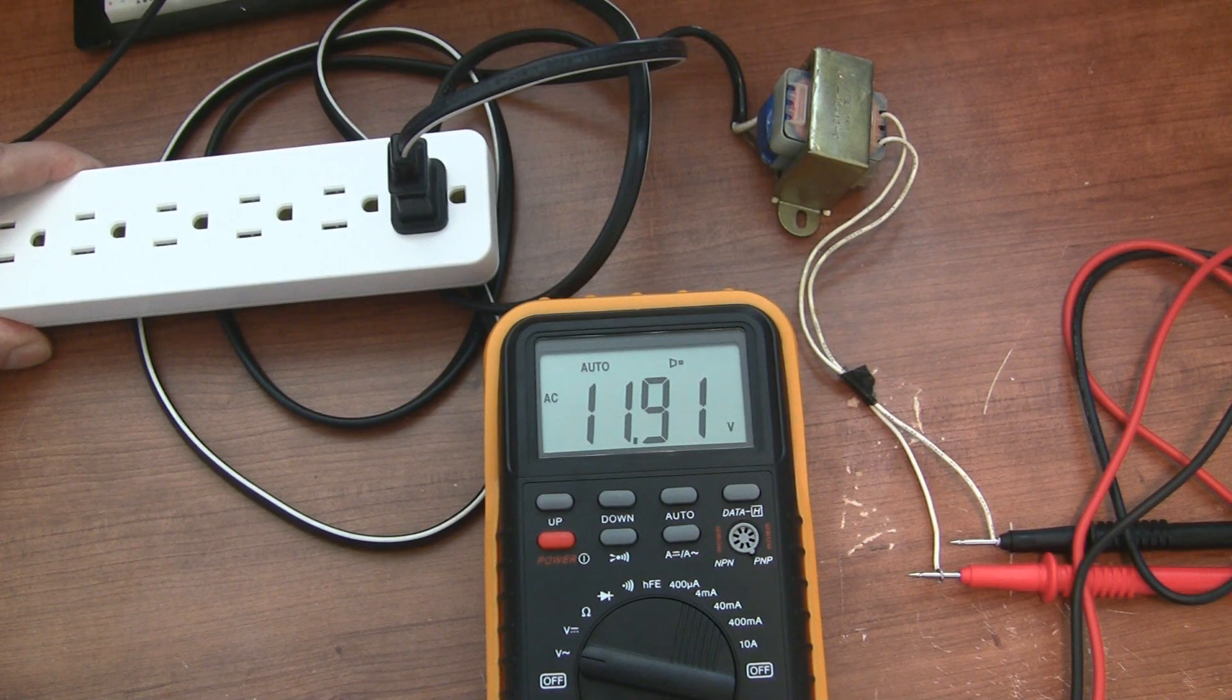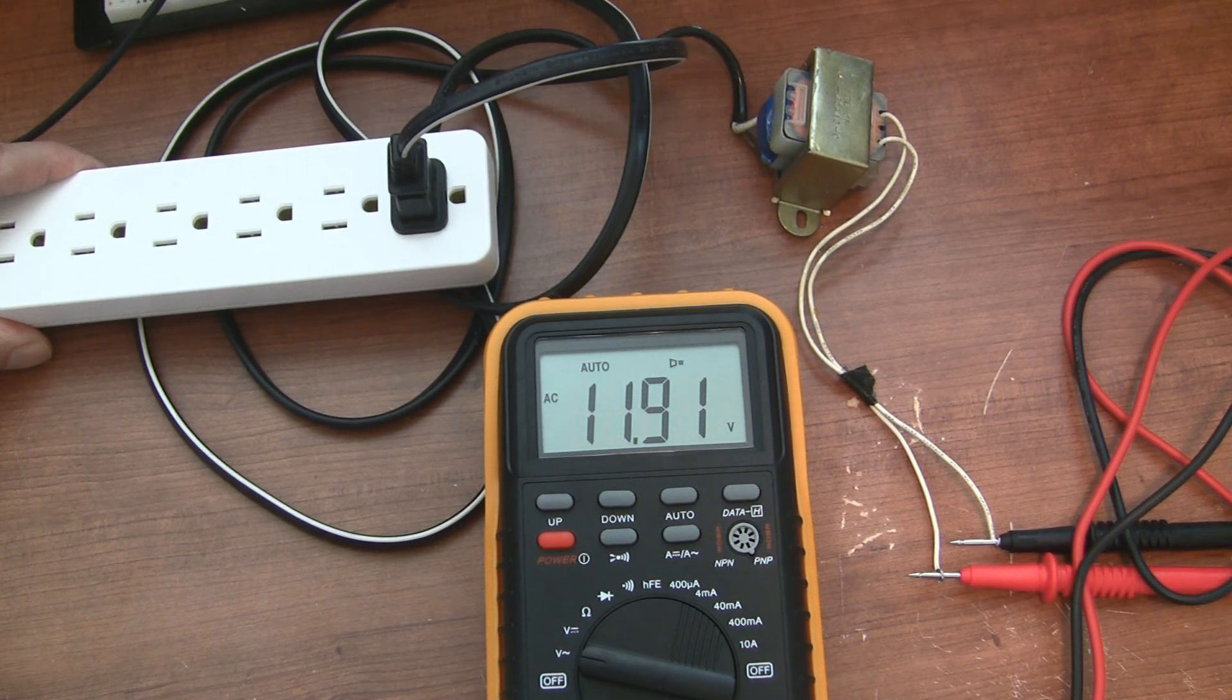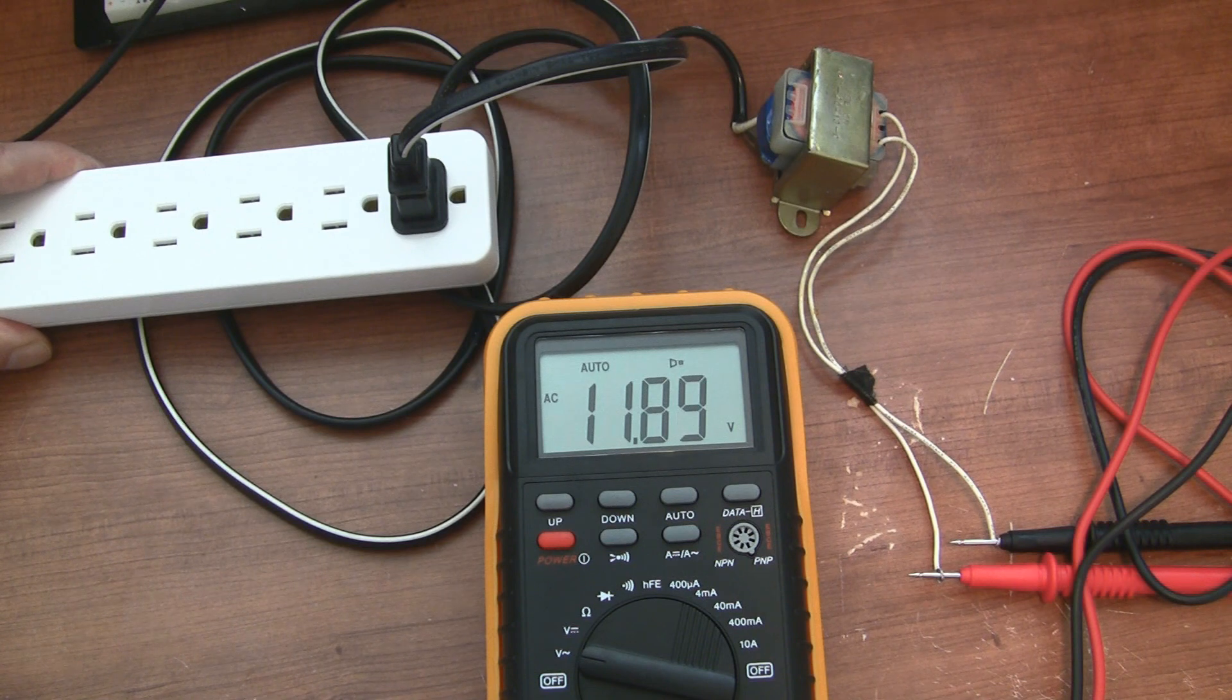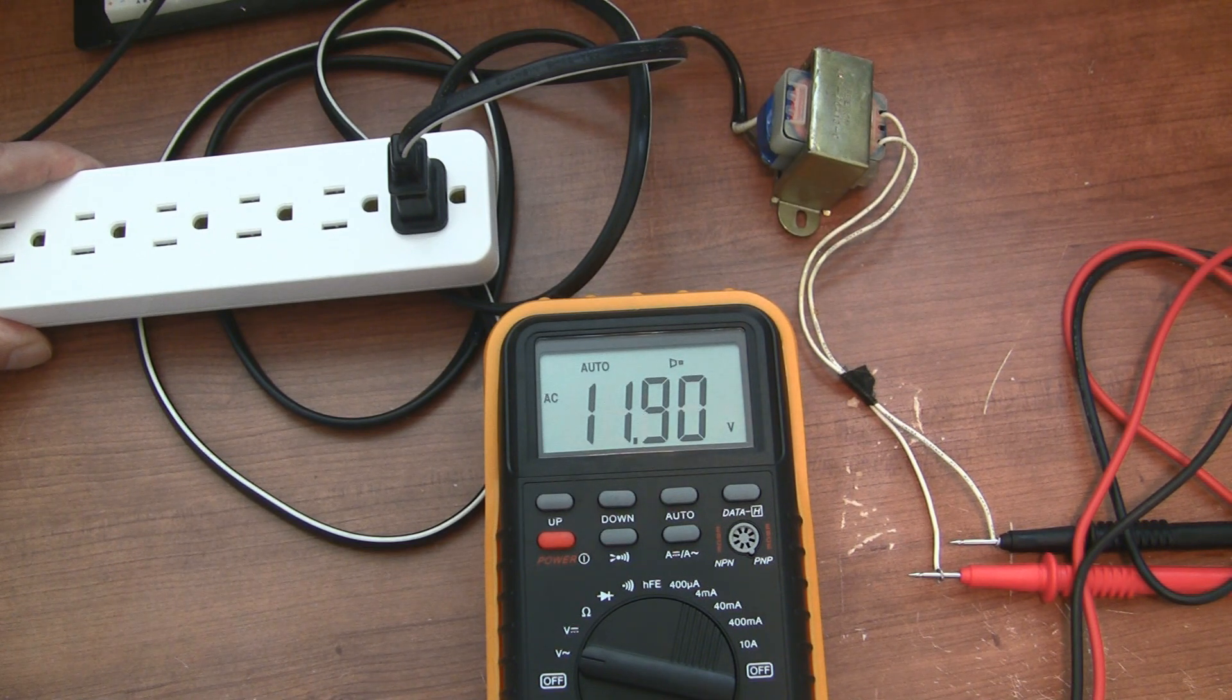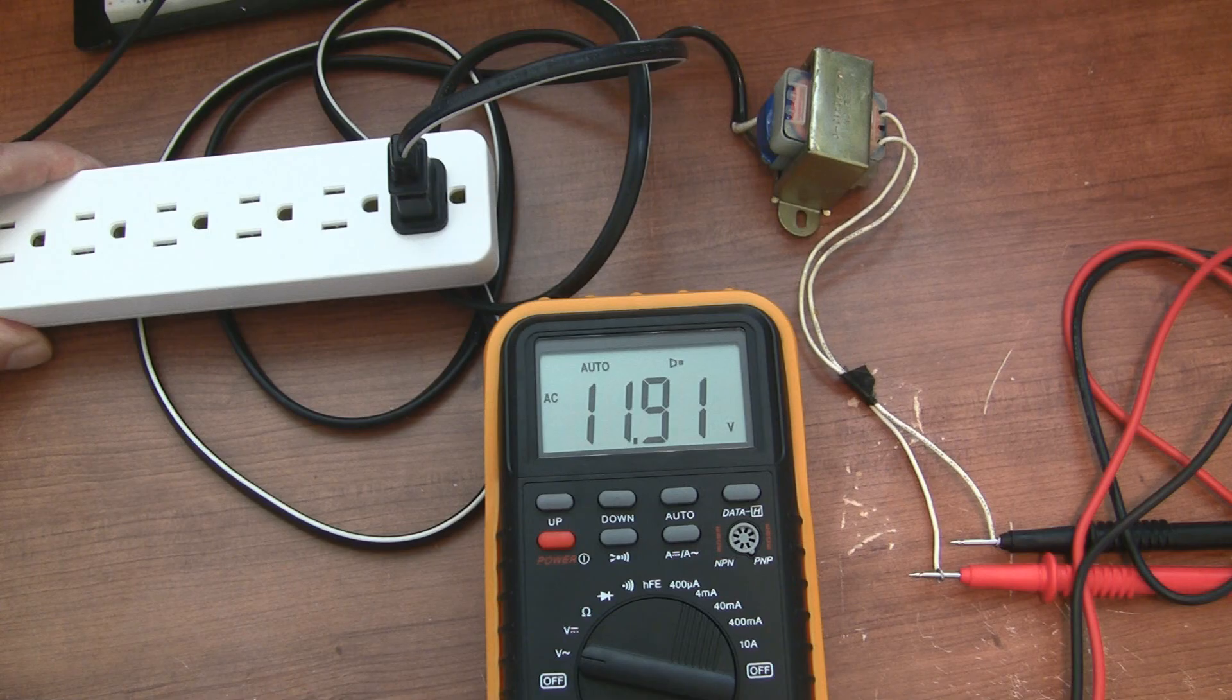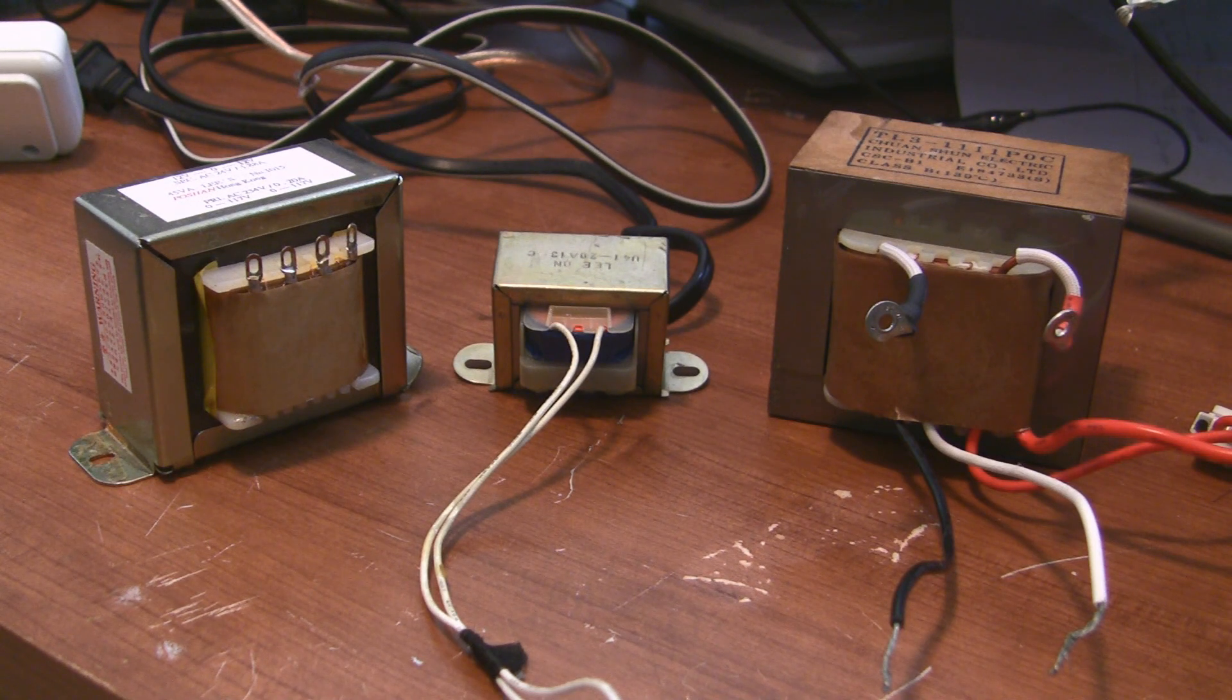But, not every transformer will be like this. Some transformers will not give you the option of having multiple configurations on the primary side or the secondary side. I already showed you an example of a transformer I ripped out of an old boombox. All it does is take 120 volts and spit out 12 volts. This is a nice and easy solution, but at least if you know how windings work, you'll be able to use all kinds of transformers in future, not just the easy stuff.